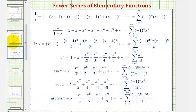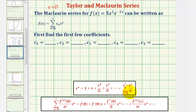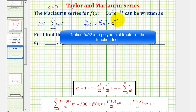Most textbooks have a table of power series for elementary functions similar to the one shown here. We'll use this power series to build our Maclaurin series. Notice this power series is centered at x equals 0. So knowing the series for e to the x, we can think of our function as a product: f(x) = 5x² times e to the negative 2x. We'll find the Maclaurin series for e^(-2x) by substituting negative 2x for x, then multiply 5x² by the new power series.